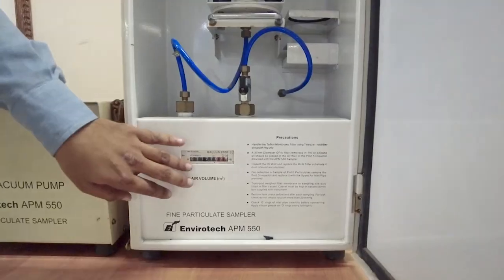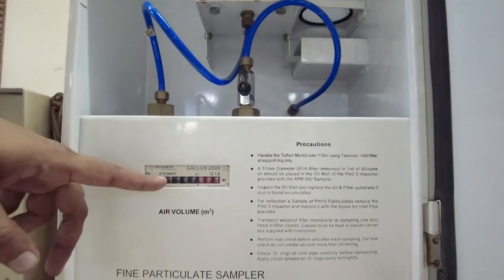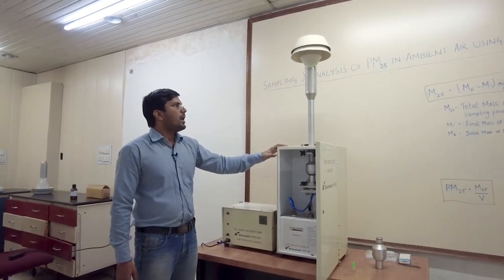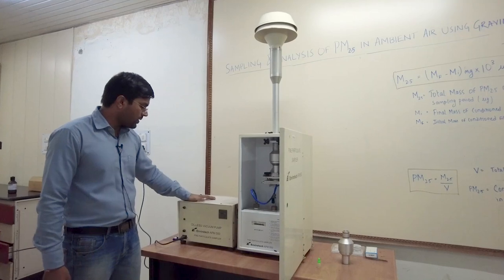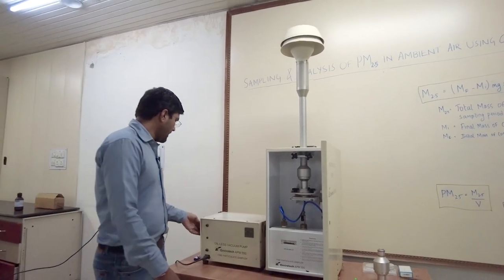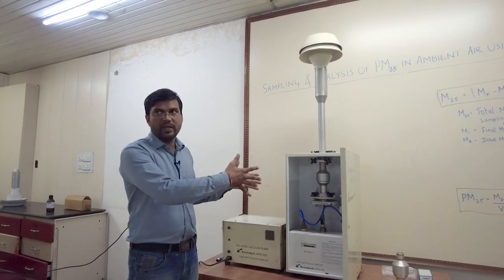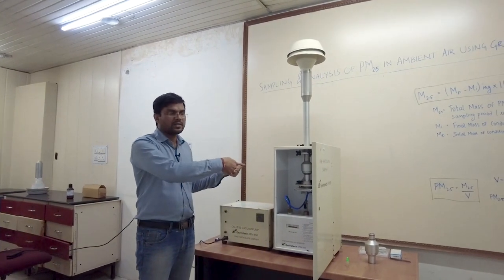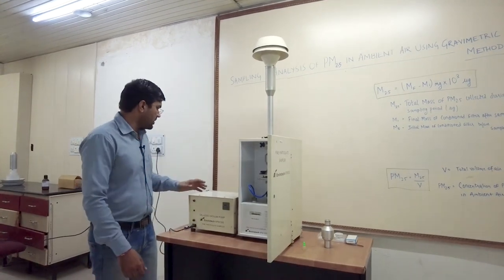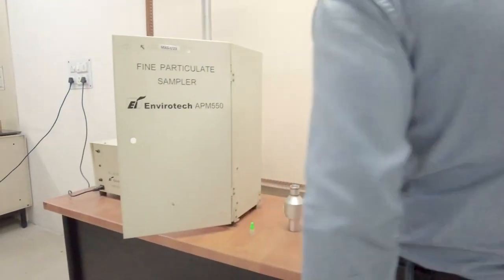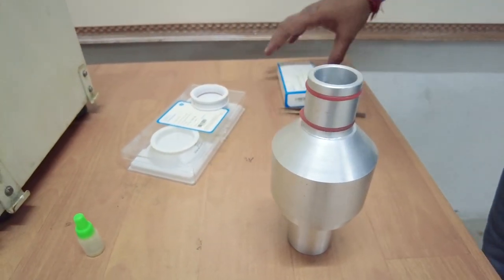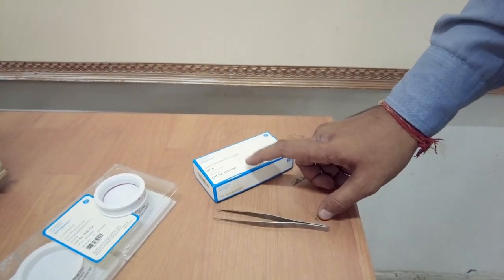Now, what happens inside the winds impactor: here we have another unit of the winds impactor. It contains the 47 mm PTFE filter and a GFA filter — a glass microfiber filter — for the impaction purpose. This is the winds impactor; we gently open it when setting up the instrument. Inside the impactor assembly we have the oil well. We remove the upper part of the oil well, and inside we have a 37 mm GFA filter. Before starting the experiment we place this GFA filter.